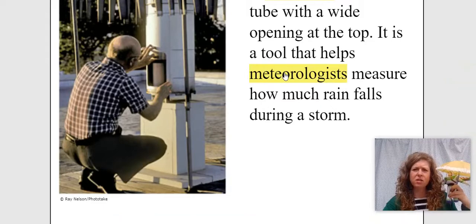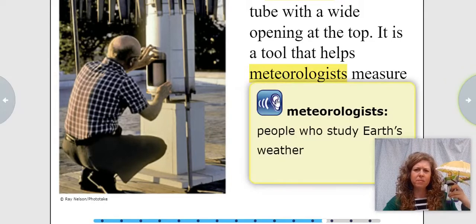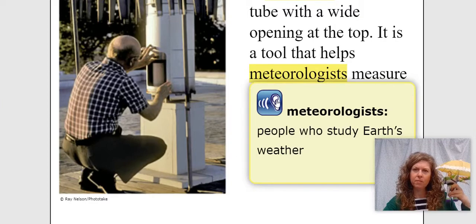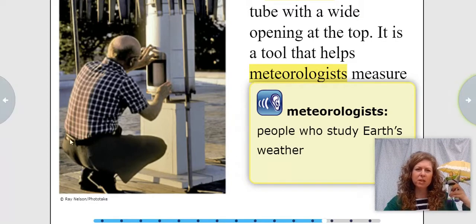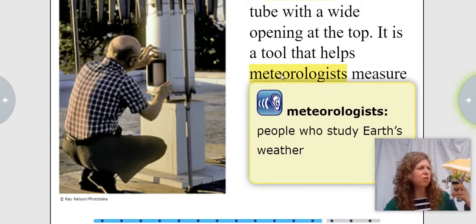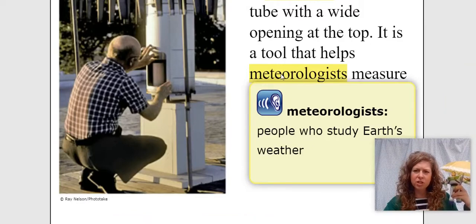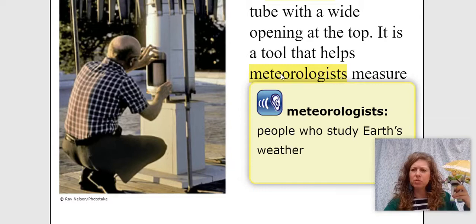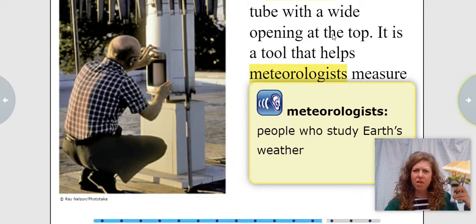Let's find out what this next word means: meteorologist. Meteorologists — people who study earth's weather. This man must be a meteorologist. Can you turn to your reading buddy and tell them — meteorologist: people who study the weather. Great job, friends.